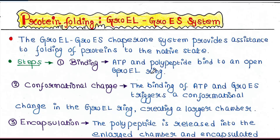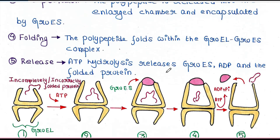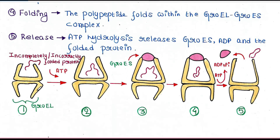There are a few steps. The first step is binding. ATP and polypeptide bind to an open GroEL ring. Here we have the GroEL chamber that is open now. An incompletely or incorrectly folded protein and ATP bind this GroEL system, just like this.